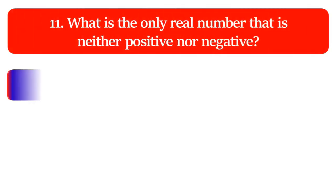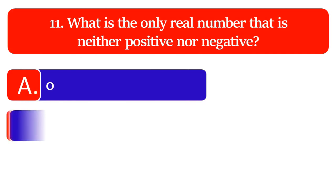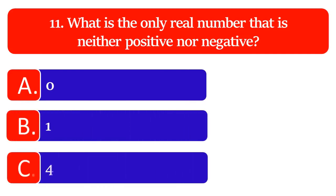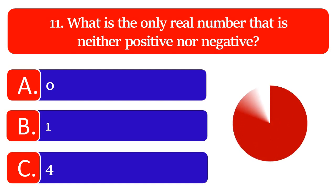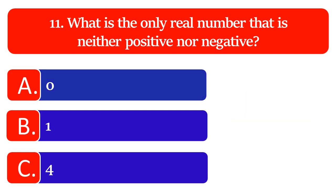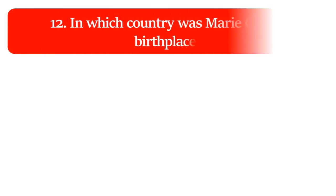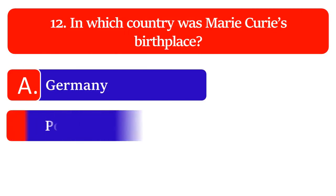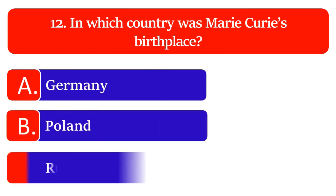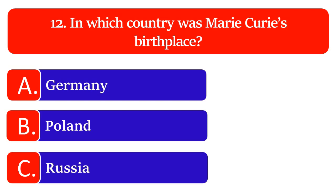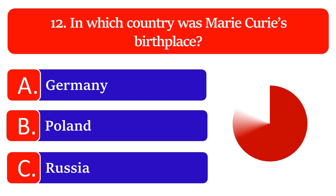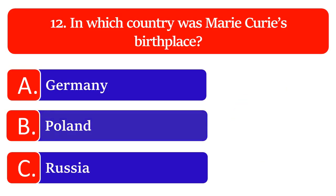What is the only real number that is neither positive nor negative: 0, 1 or 4? The great answer is 0. In which country was Marie Curie born: Germany, Poland or Russia? The great answer is Poland.